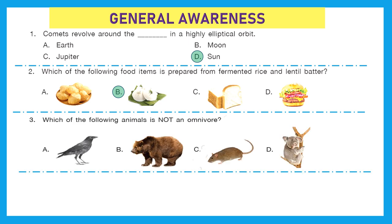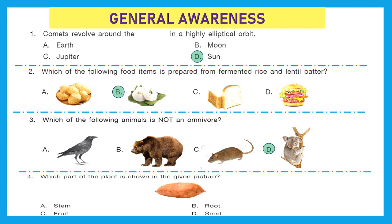Question 3: Which of the following animals is not an omnivore? Omnivores are those living beings that eat both plant and animal-based products. Crow is an omnivore, bear is also an omnivore, rat is also an omnivore. But option D, Koala — they are herbivores. The right answer is option D.